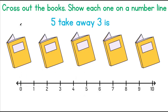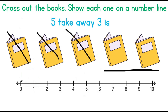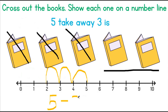Cross off the books and show each one on a number line. 5 take away 3 — we have 5 books, let's take away 3, and we are now left with 2. Let's draw this on the number line, starting at number 5 and going back 3 because we are subtracting. Our number sentence will read 5 minus 3, and our answer is the number 2.